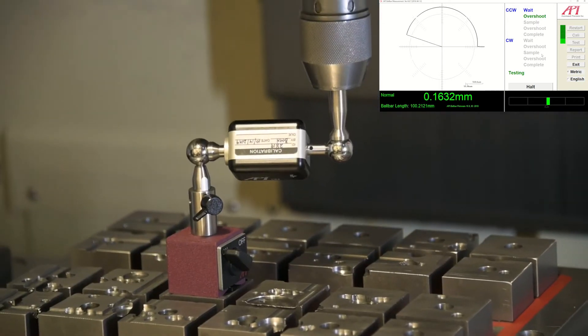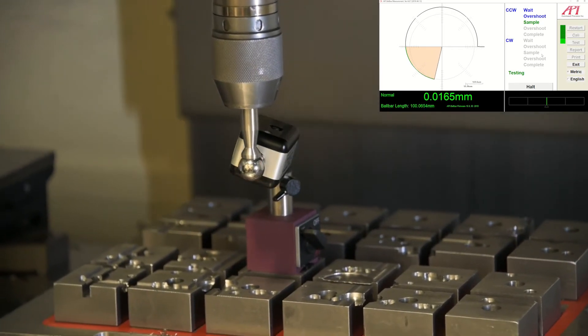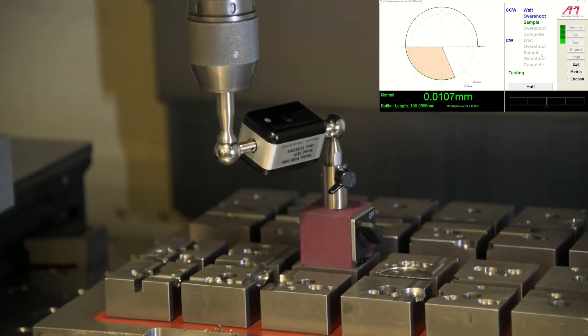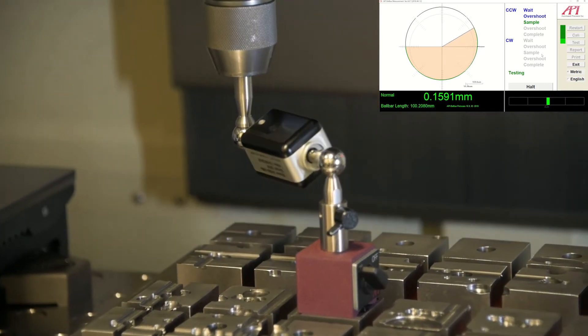So right now we're running a circle in the X and Y planes and see how they react together. See how the servos are tuned. We're looking at backlash and, of course, the circular interpolation aspect.